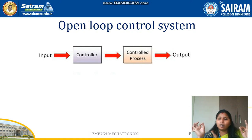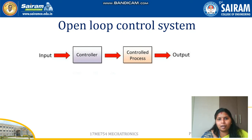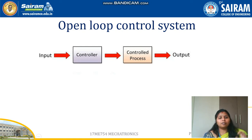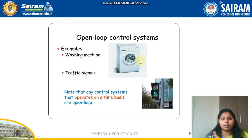In an open loop control system, the work is done. For example, in a machine shop lathe, we place the workpiece and perform some operations. We know the operation has been done, but we don't know to what extent it is accurate. Only after measuring will we come to know — by looking alone we cannot tell whether it is accurate. Some work is done, but we do not have a feedback device to know whether the work is done properly or not. Examples include a washing machine and traffic signals.